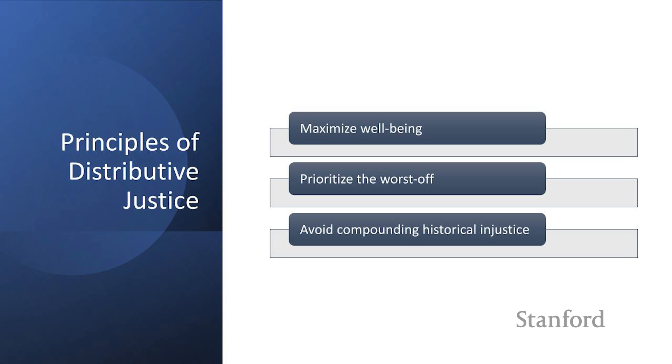Now to summarize, I have presented you with three principles of distributive justice, as I said, intuitive versions of these principles. One that focuses on maximizing well-being, one that focuses on prioritizing those who are worse off, and one that focuses on avoiding compounding historical injustice. Please remember again, this is an intuitive and not an exhaustive list of distributive justice principles. But what matters here is that these principles are applicable to distributions of benefits and burdens through algorithmic decision-making.